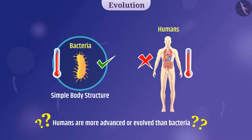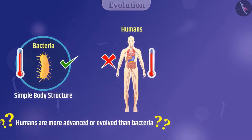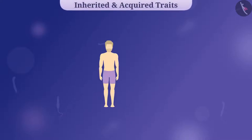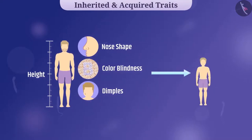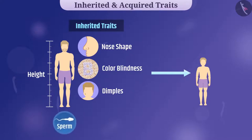Now, let's discuss another aspect of development. Some characteristics such as height, nose shape, color blindness, and dimples can be transmitted from one generation to the next. Such characteristics are called inherited traits. Inherited traits are stored in the DNA of gametes.